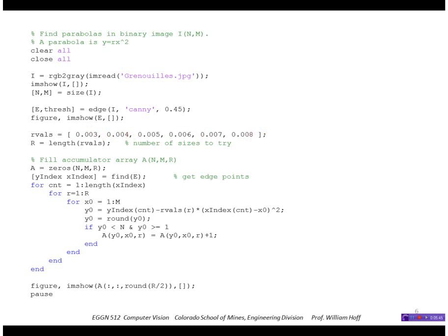The accumulator array is three-dimensional and this command finds nonzero edge points and returns their x and y coordinates in these indices. Then we go through each of those edge points and generate the possible values of r and the possible values of m.